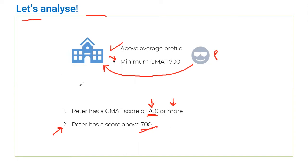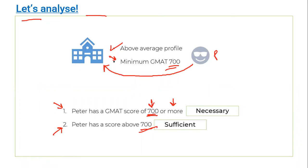So what's the difference between these two statements? The point is: '700 or more' is the bare minimum — this condition includes the bare minimum score you need to get into Wharton. On the other hand, statement two is telling us Peter has done even better — he's gone above 700. It's almost like statement two is really good to have; it makes it sufficient for Peter to get into Wharton, whereas statement one is showing us the necessity — the bare minimum that must happen. Therefore, statement one is a necessary condition and statement two is a sufficient condition.